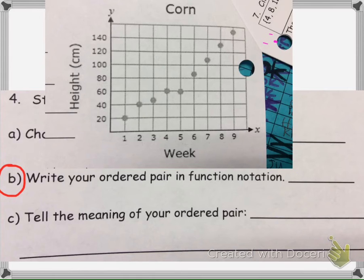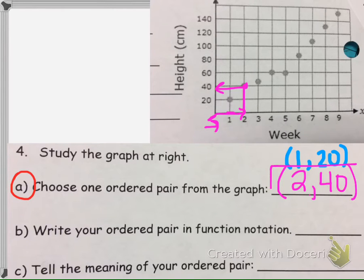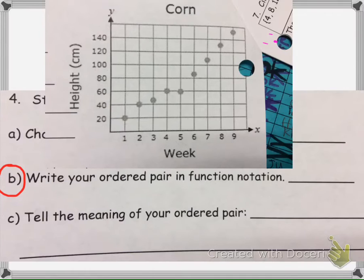Okay, now let's look at part B. Part B says write your ordered pair in function notation. So I'm going to use this point right here, the 2,40. So this one right here. And you can pick whatever variable you want. I'm going to pick F.